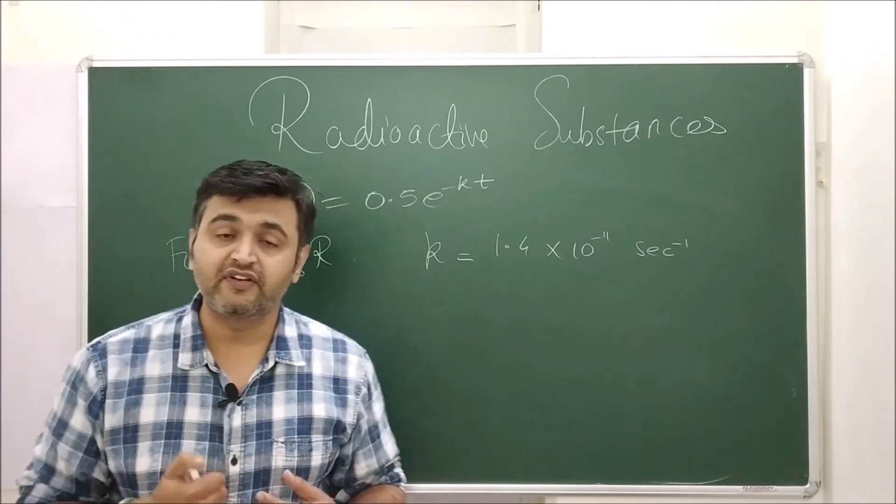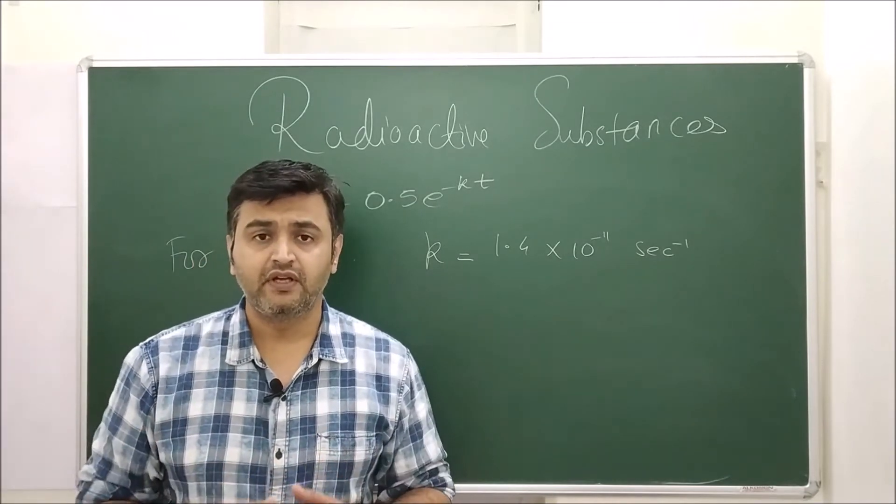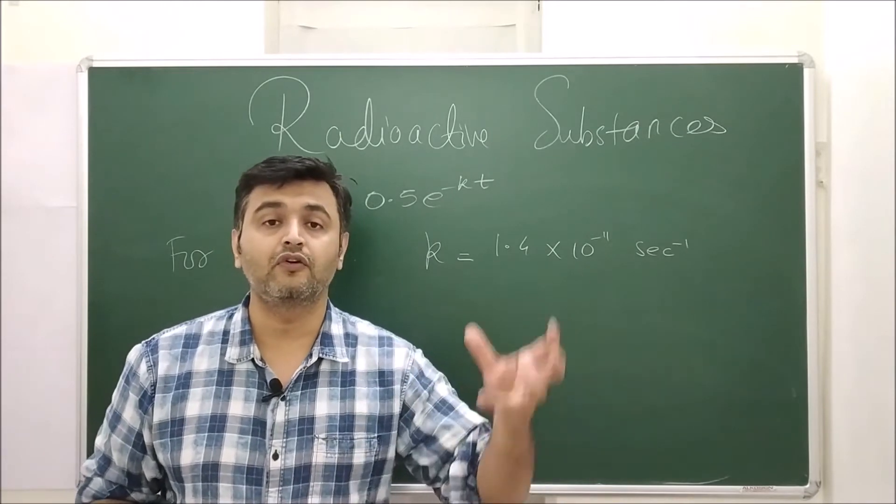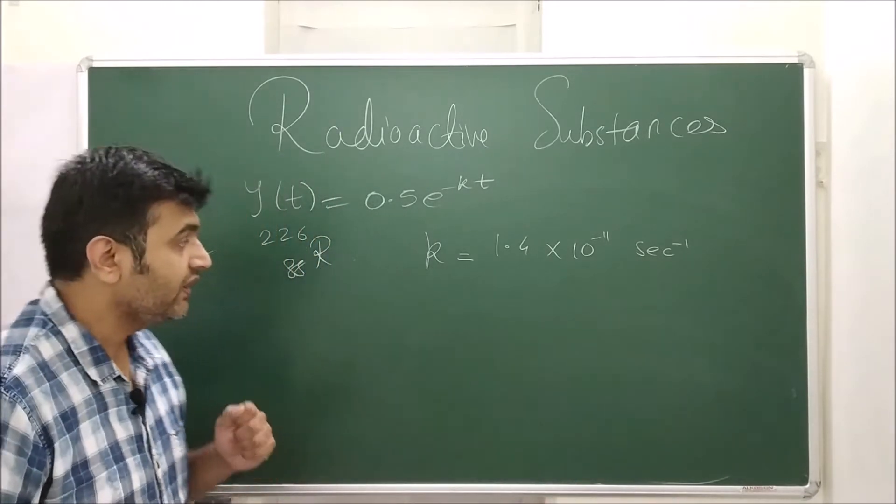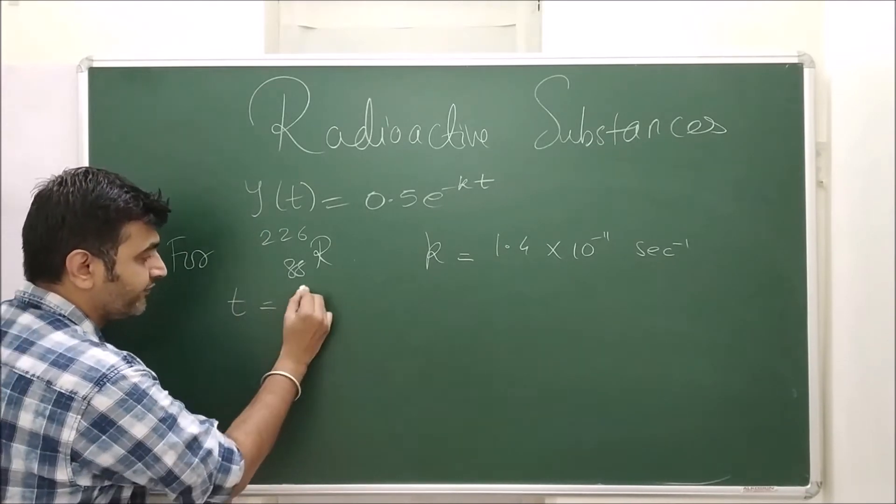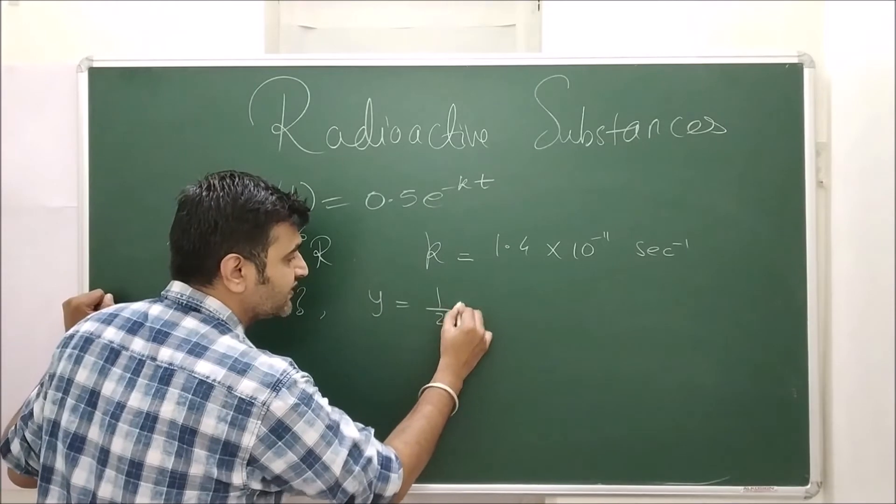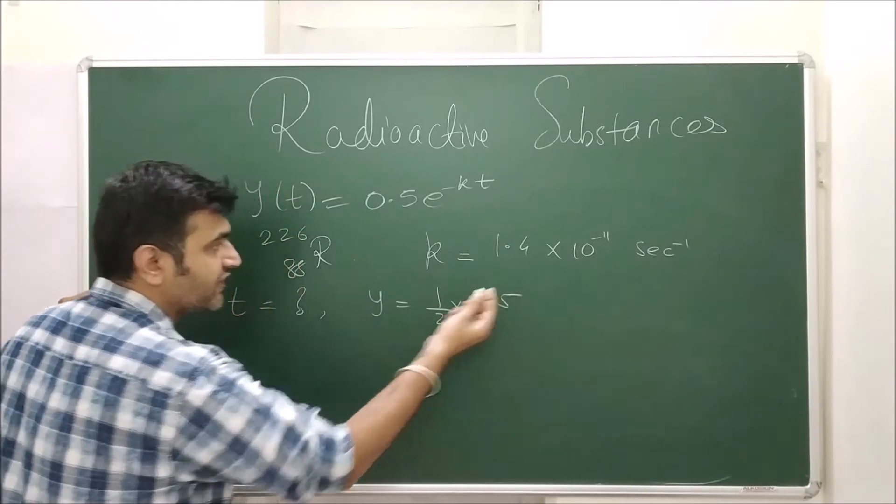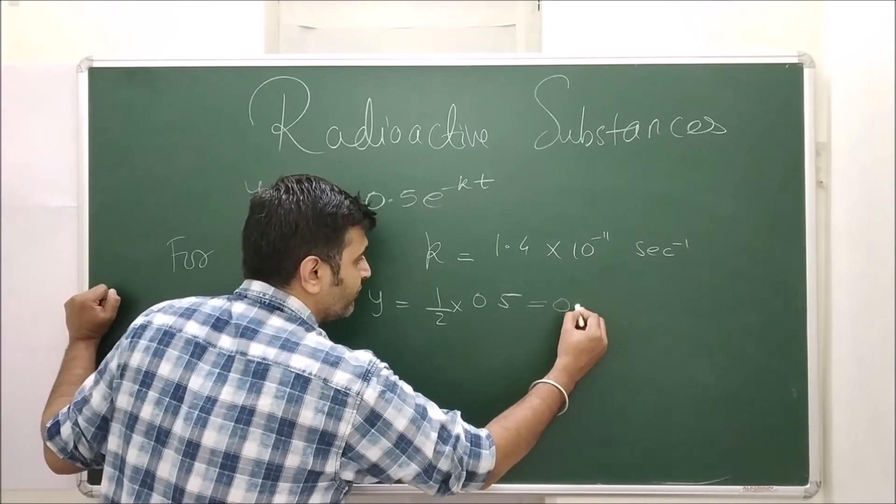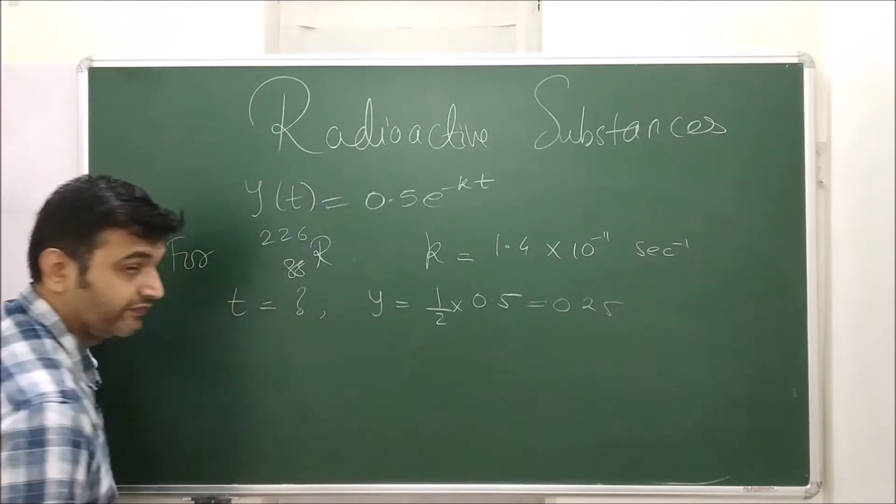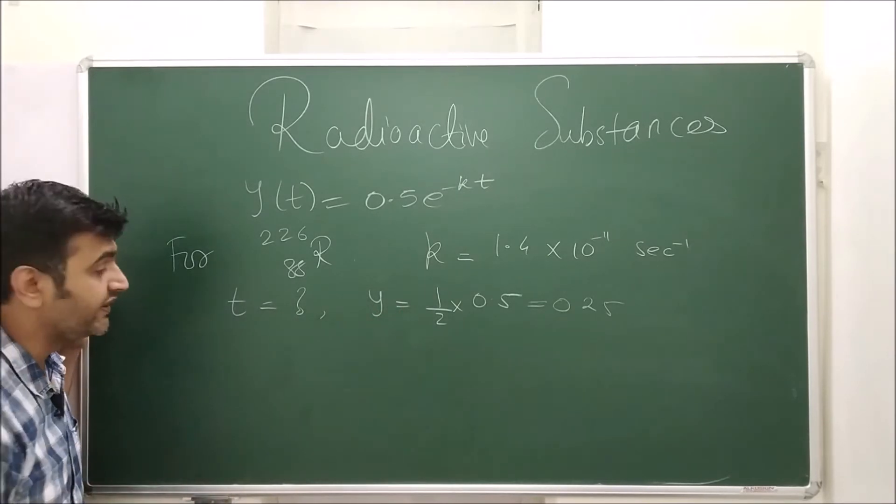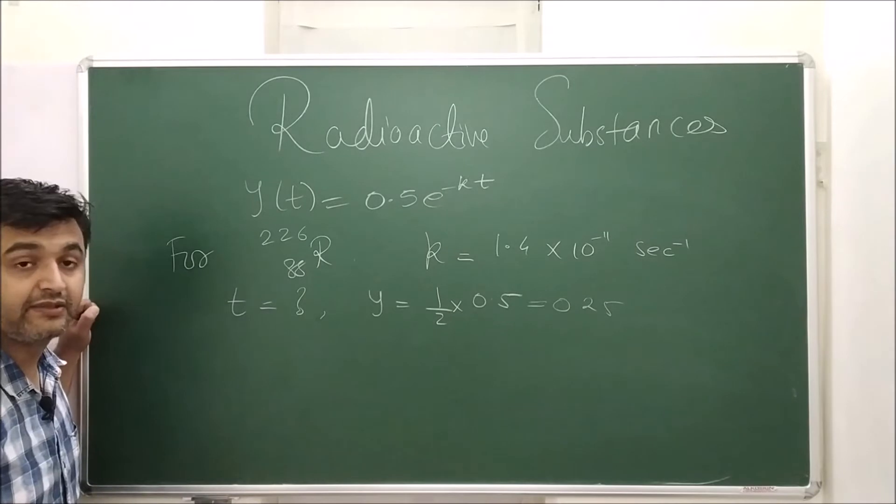Now suppose I want to find the half-life period. What is half-life? It is the time the substance takes to reduce to half of its quantity. That means I want to find time when y is half of the original quantity. Suppose 0.5 was given. When will this happen? That means 0.25. At what time will y be this much? What is the half-life time for the radium substance?